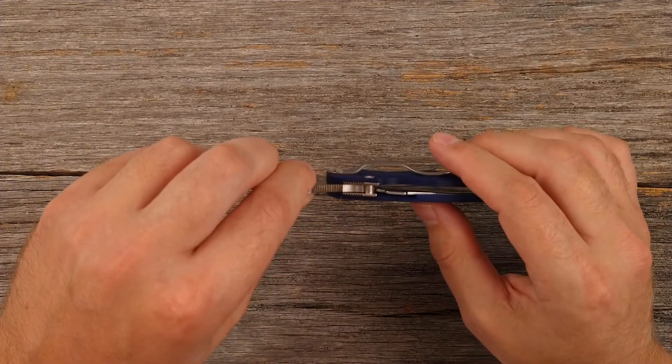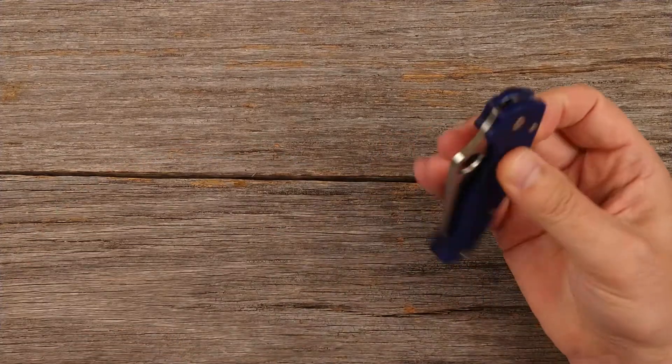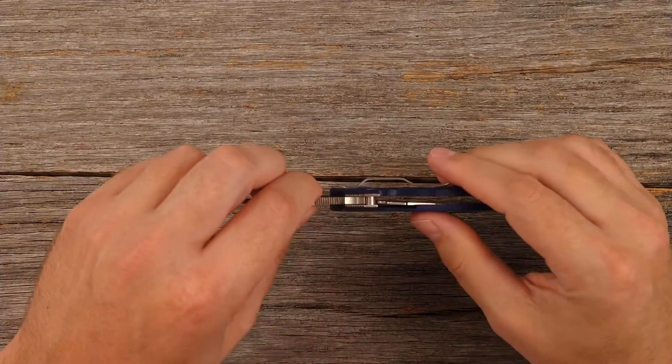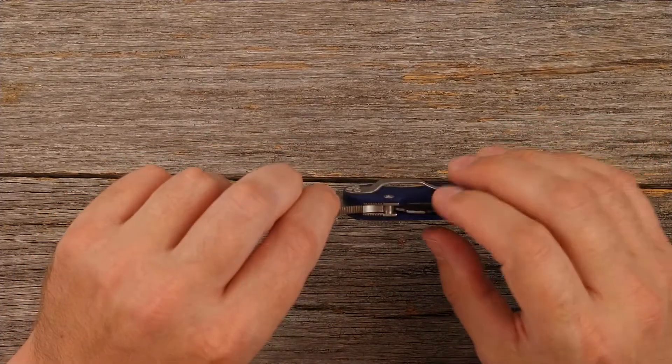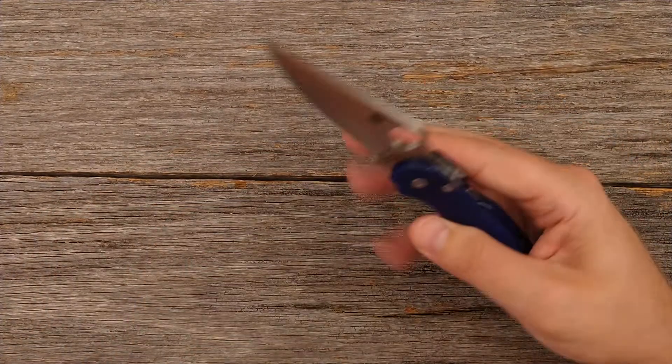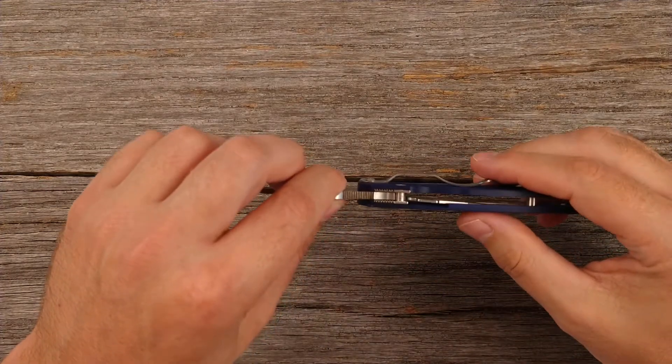This compression lock is just awesome. And I've gotten to where I really like them. They feel similar to a liner lock. And a lot of people just compare them to a liner lock on the back of the knife. But that's just not really the case. It's just so much more secure, much safer lockup than a liner lock.